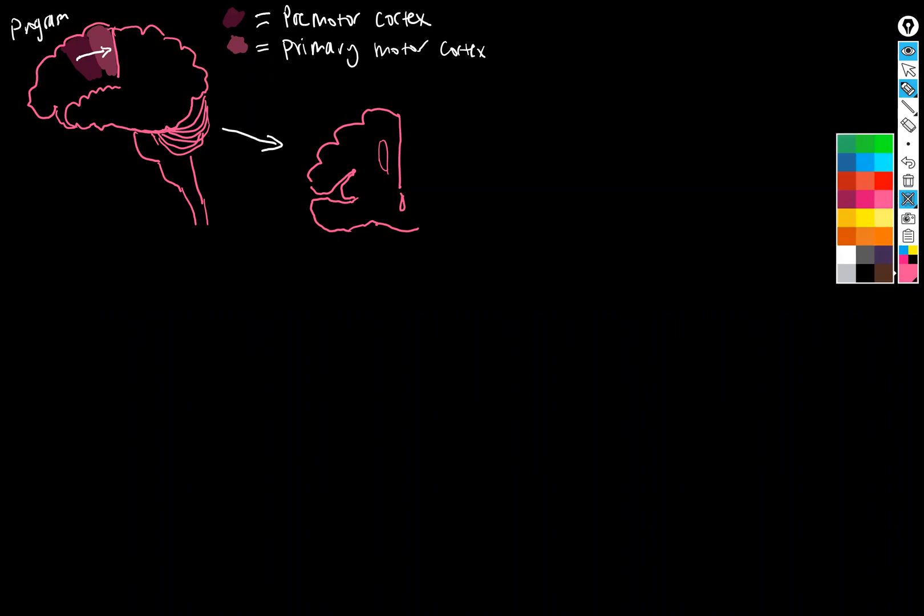So here we have our half of our brain, so we've got in the primary motor cortex what are called pyramidal cells. And pyramidal cells are called that because the cell bodies of these neurons look kind of like triangles.